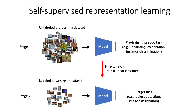The goal of Self-Supervised Learning, or SSL, is to learn rich generalizable features on unlabeled data. First, a model is pre-trained on a large-scale unlabeled dataset with a pseudo-task like inpainting, colorization, or instance discrimination. Then the model is used for a downstream task with labels like object detection or image classification.